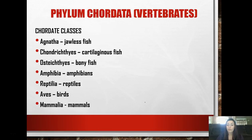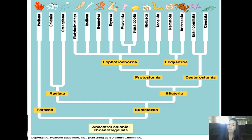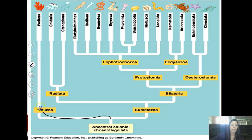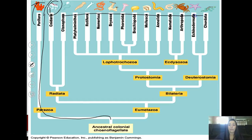These are the major chordates we're going to discuss: Agnatha, which is jawless fish; Chondrichthyes, cartilage fish; Osteichthyes, bony fish; Amphibia, amphibians; Reptilia, reptiles; Aves, birds; and Mammalia, mammals. Here's a look at how the cladogram looks for these organisms. You have the very ancestral species, and as we keep going we get to chordates. Chordates are considered some of the most highly evolved animals. That is all for your notes - we will talk about those kingdoms in class in more depth.